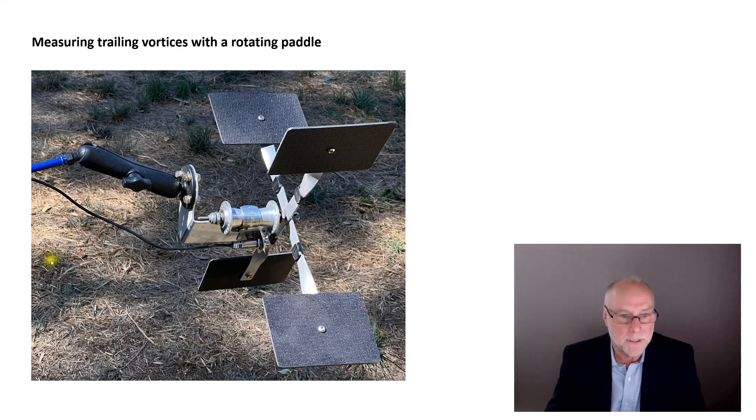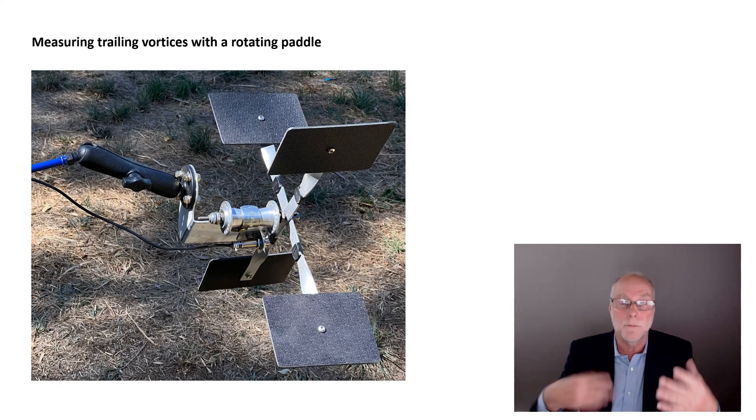So here's a close-up of it. It uses a bicycle hub as the bearing. Good quality bearing, of course, in bicycle hubs. It's very cheap. It uses aluminum strip bent through 90 degrees to mount the paddles. And what you may just be able to see here is an electronic sensor, which is a tachometer sensor. It measures the speed of rotation of the paddle.